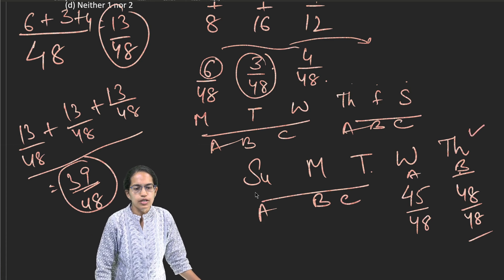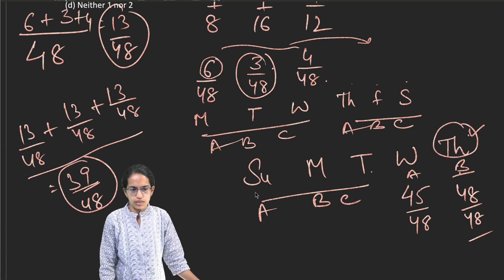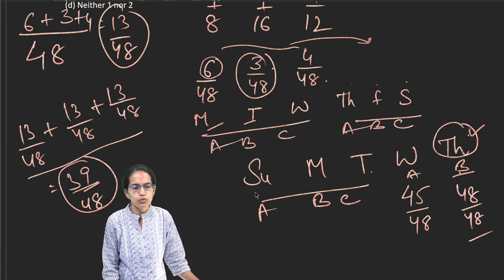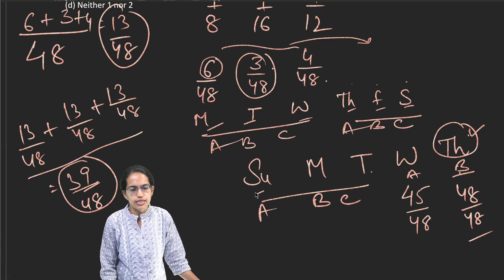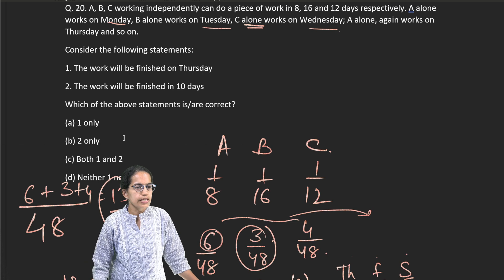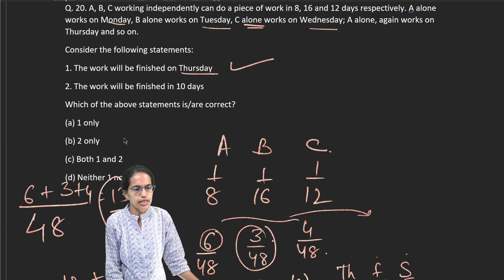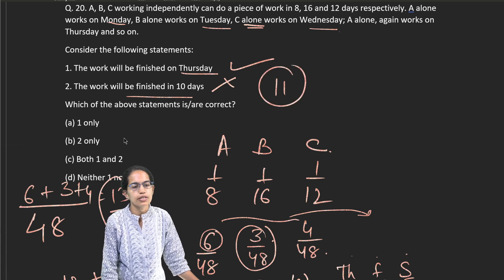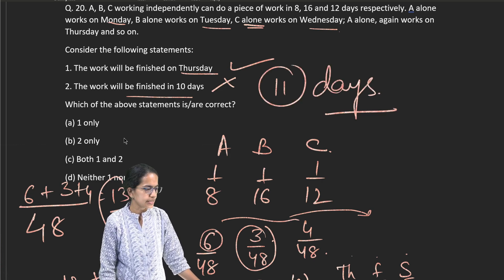Now, when the work gets finished, the work gets finished on Thursday. How many days are required? 1, 2, 3, 4, 5, 6, 7, 8, 9, 10 and 11. So in the question, it says the work would be finished on Thursday. Correct. The work would be finished in 10 days. Incorrect. The work would be finished in 11 days. Clear?